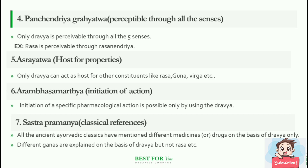Ashrayatva — host for properties. Only Dravya can act as host for other constituents like Rasa, Guna, Virya, etc. Arambha Samarthya — initiation of action. Initiation of a specific pharmacological action is possible only by using the Dravya; with the help of Dravyas, all these actions are possible.